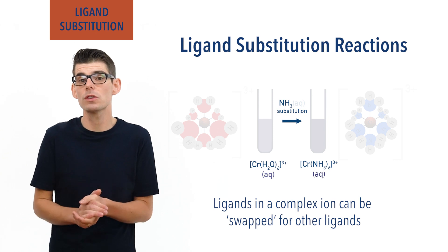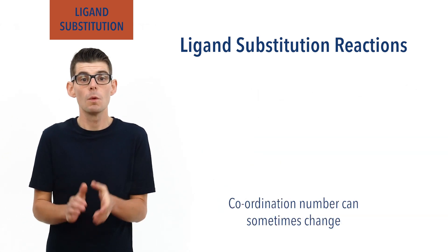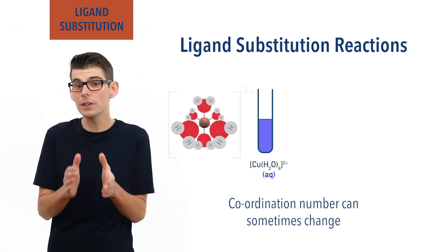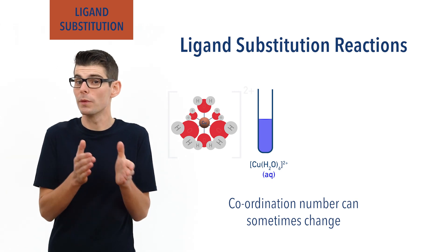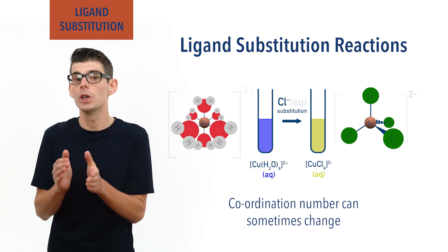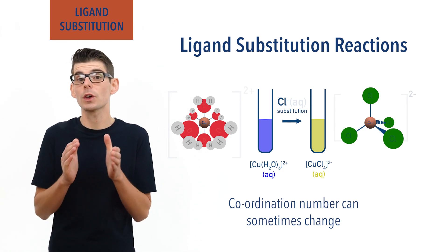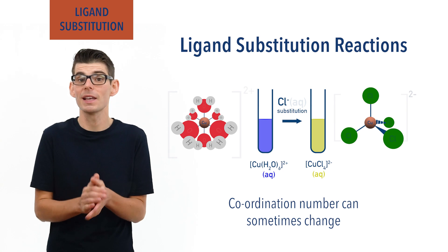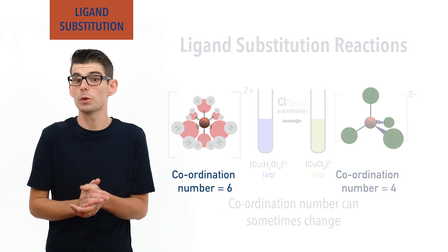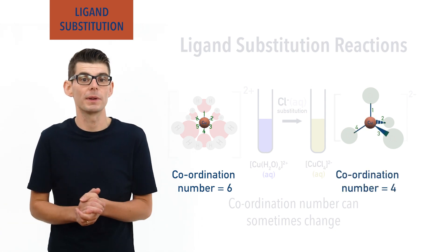Sometimes when such reactions occur, the coordination number of the complex ion may change. For example, when the hexa aqua copper 2 ion, [Cu(H2O)6]2+, undergoes ligand substitution with chloride ions, the complex ion [CuCl4]2- gets formed. In this case, the coordination number of the complex has changed from 6 to 4, as there were 6 coordinate bonds in the original complex ion and 4 in the final complex ion.